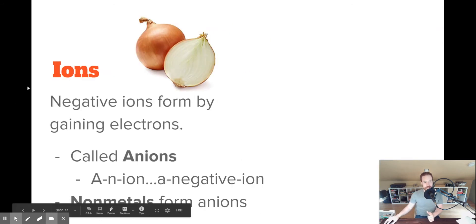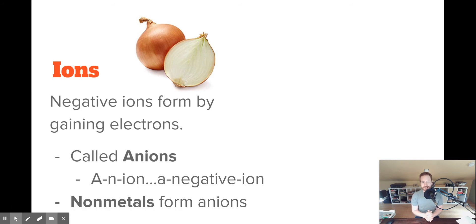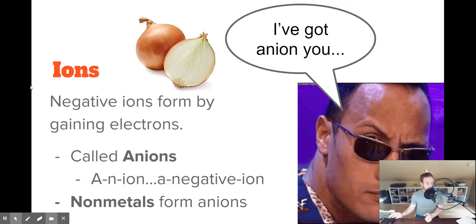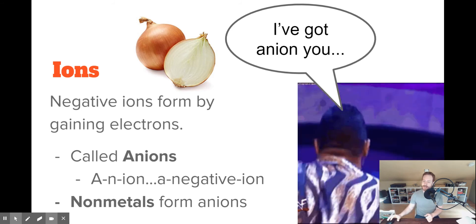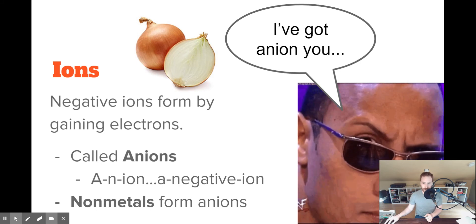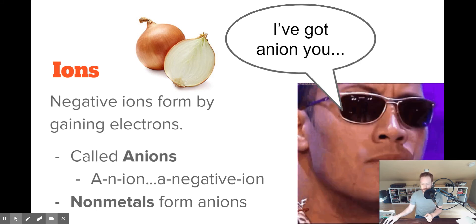The word that we use for negative ions is anions. Not anions. Even though it kind of looks like onions, it's pronounced anion. As in, I've got anion you. And it's the non-metals that are going to form these negatively charged anions.